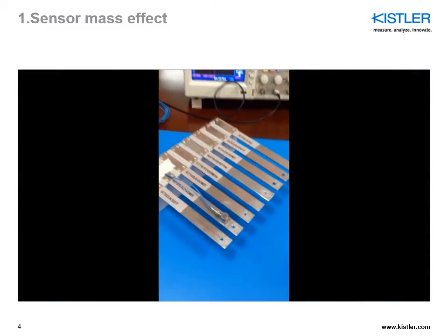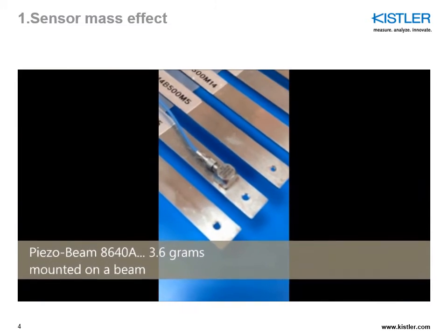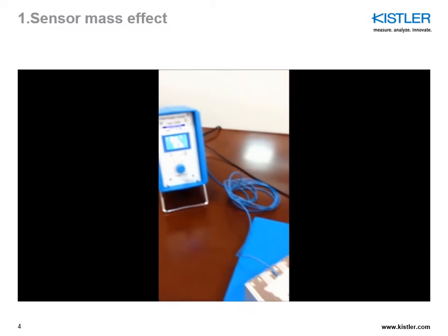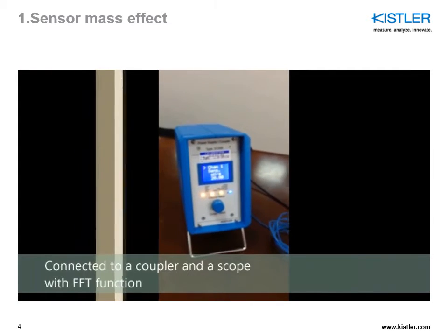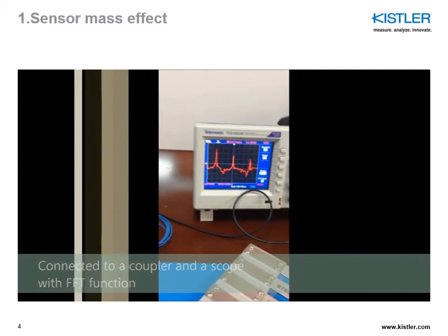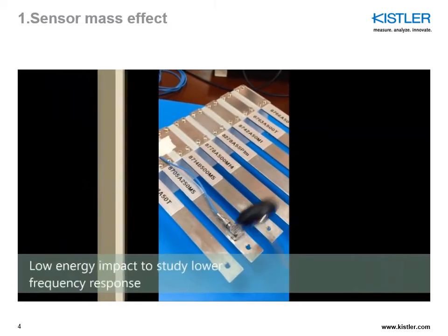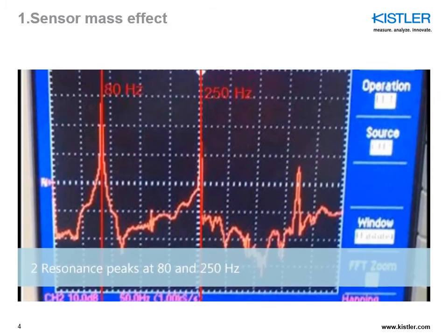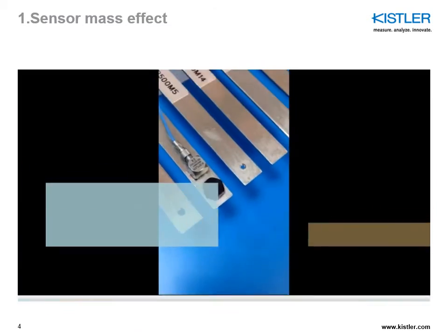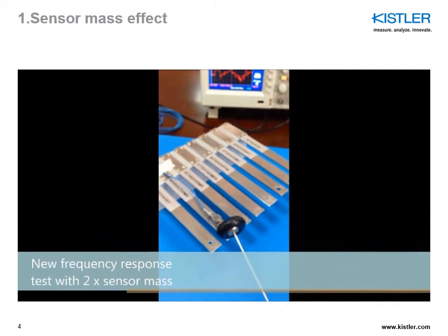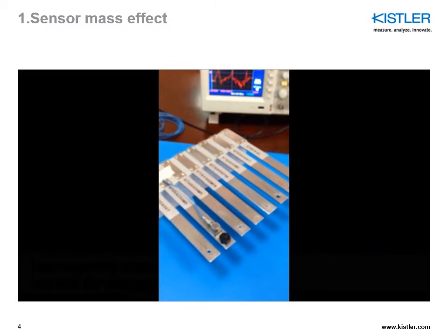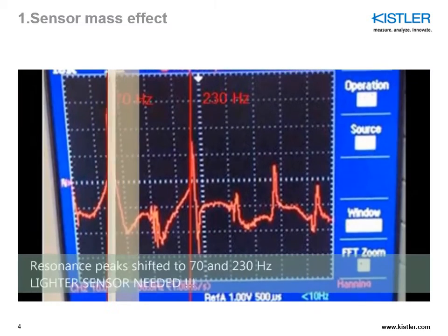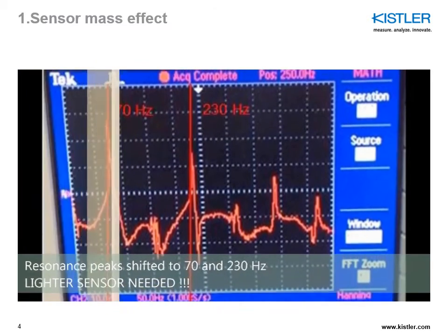We are here performing a very simple test using a cantilever beam demo setup. We are mounting one of our piezo beam 8640A sensors, which is 3.6 grams — not really negligible compared to the mass of the beam. We perform a shock test to excite resonance and look at the first two resonance peaks showing up at 80 Hz and 250 Hz. We then mount an additional mass comparable to the sensor mass and the two peaks shift down to 70 Hz and 230 Hz.